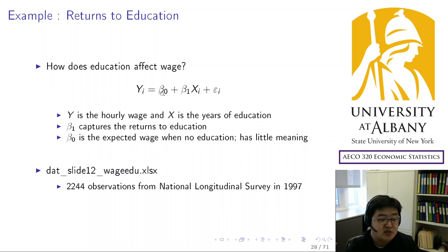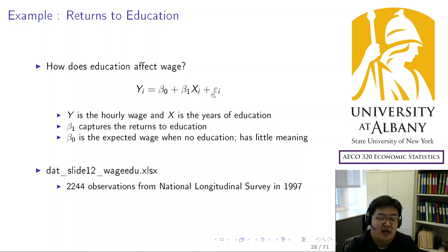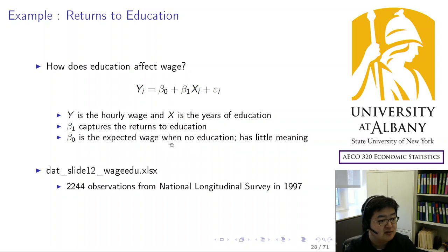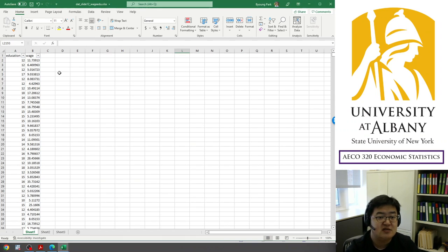Beta zero is the intercept — the expected wage when education is zero. It can be interpreted as the wage you'd earn with no formal education, though it has little practical meaning in our data because almost everyone has some positive education. We use real data from the National Longitudinal Survey of 1997, which includes more than 2,200 observations.